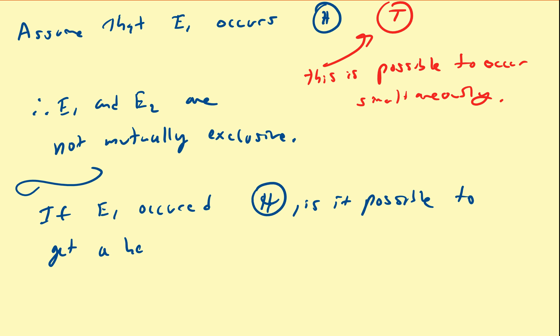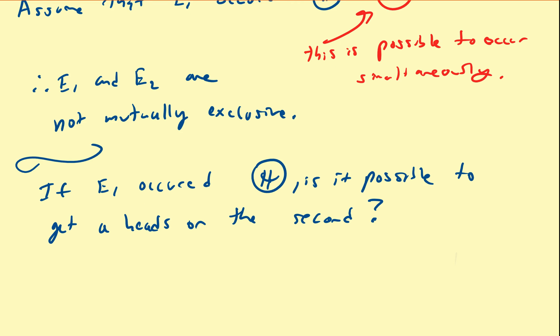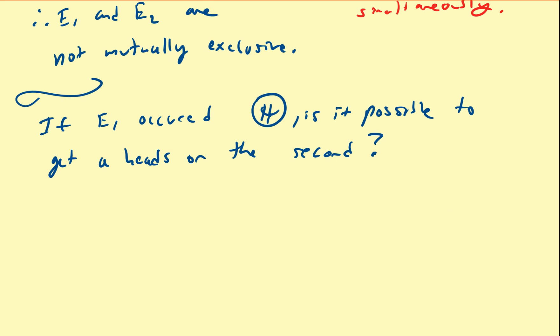That is, whatever we get on the first one does not dictate the outcome of the other. Therefore, the results of E1 and the results of E2 have no effects on the other. Therefore, E1 and E2 are also independent events.